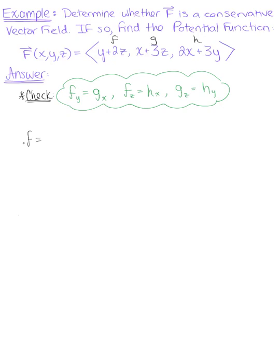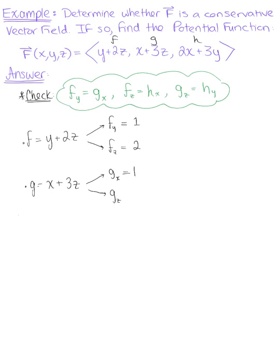Our F component is y plus 2z. The partial derivative of F with respect to y is 1, and the partial derivative of F with respect to z is 2. Moving on to our G component, defined as x plus 3z: the partial derivative of G with respect to x is 1, and the partial derivative of G with respect to z is 3. Last but not least, the H component is defined as 2x plus 3y. The partial derivative of H with respect to x is 2, and the partial derivative of H with respect to y is 3.